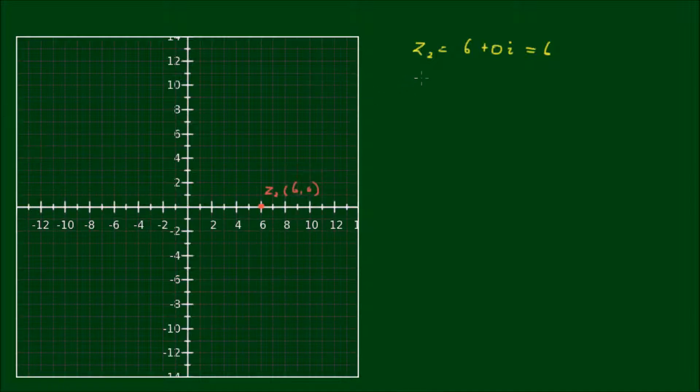And let's see what happens when we multiply z2 by i. So if we multiply i with z2 we get 6i. So i multiplied by z2 is equal to 0, 6.